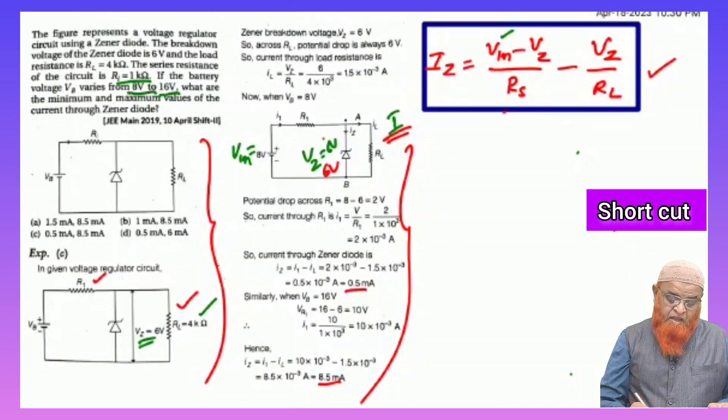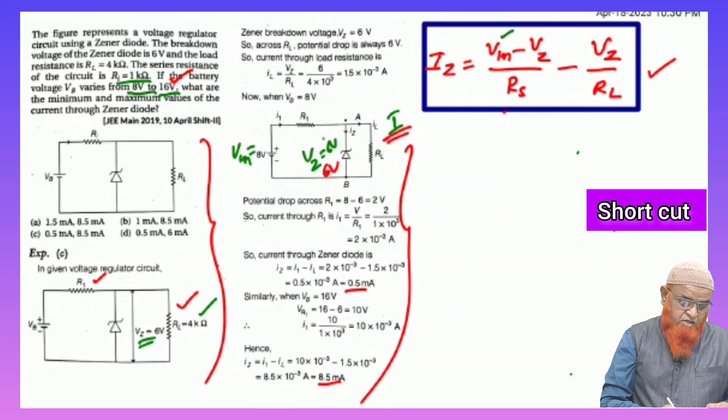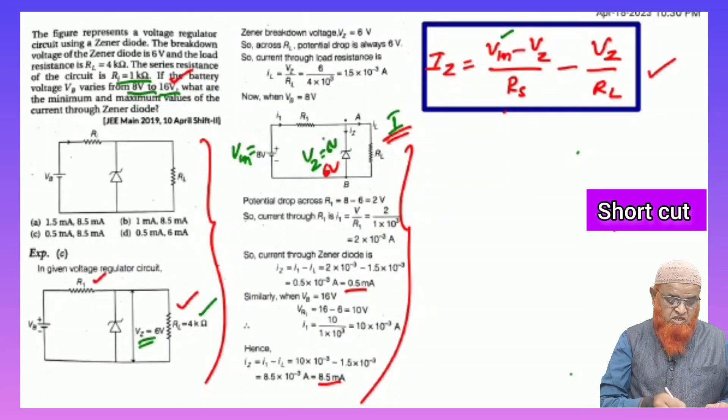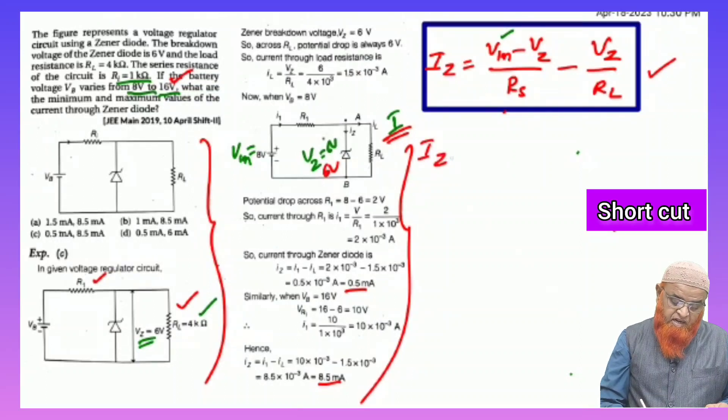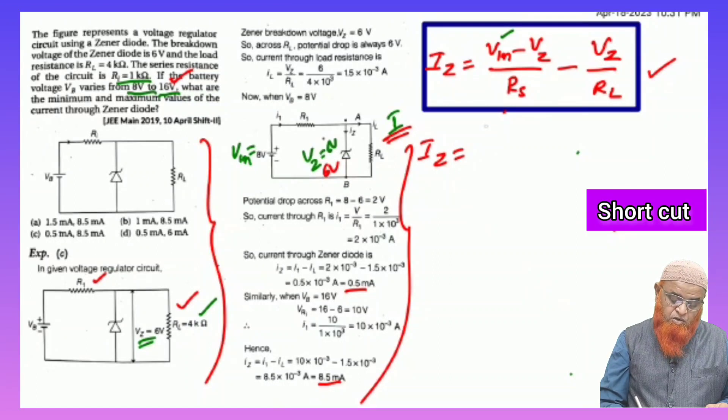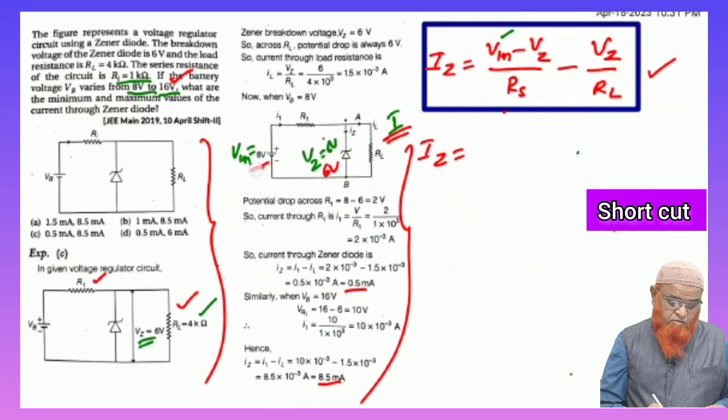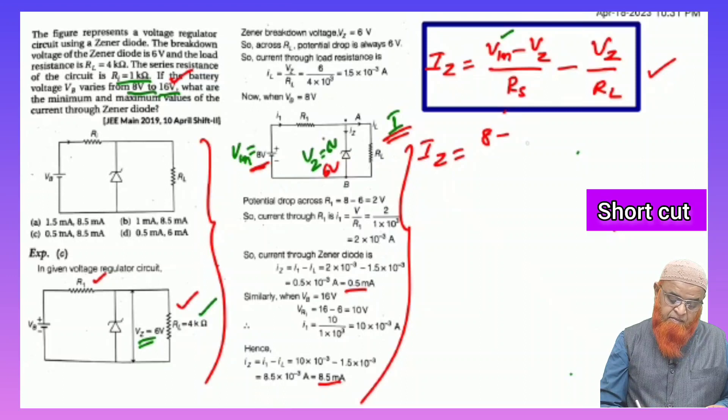Here if you observe, input varies from 8 to 16 volts. 8 volts to 16 volts given in the problem. So, you can write in the first case, IZ equals Vin. Vin is how much in the first case? 8 volts given here.